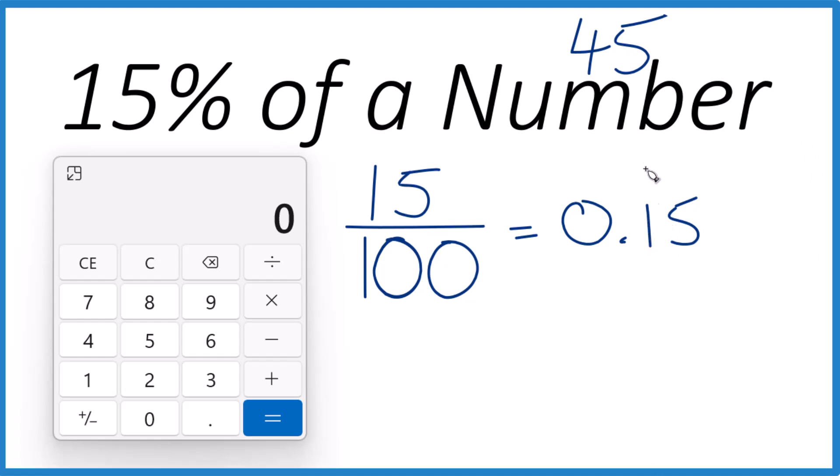Now all we need to do is take our decimal and multiply it by our number, like this. So 0.15 times 45, that gives us 6.75.